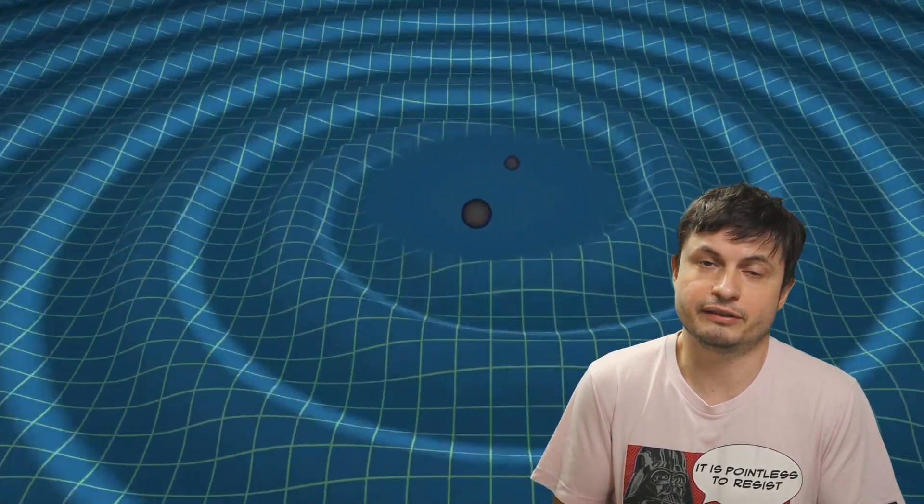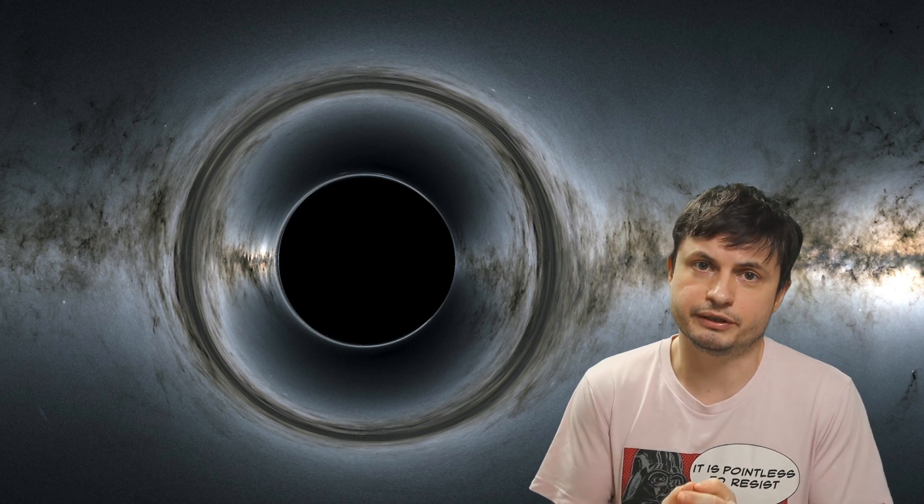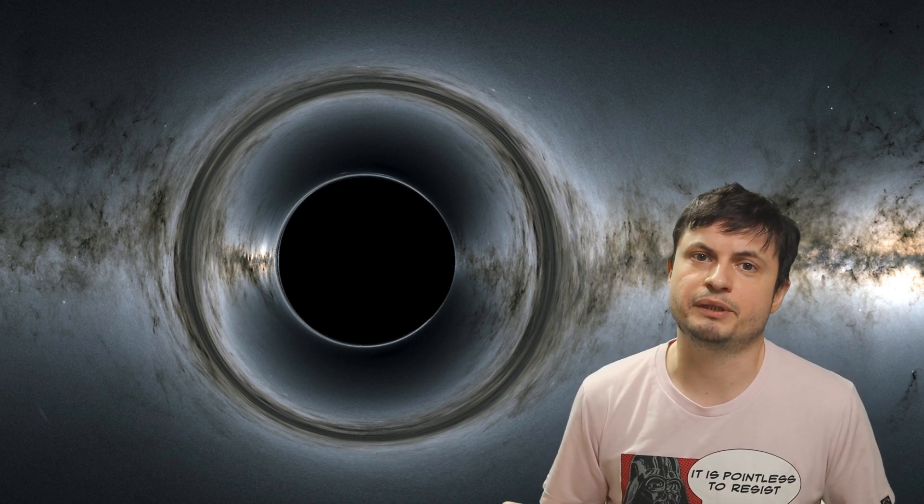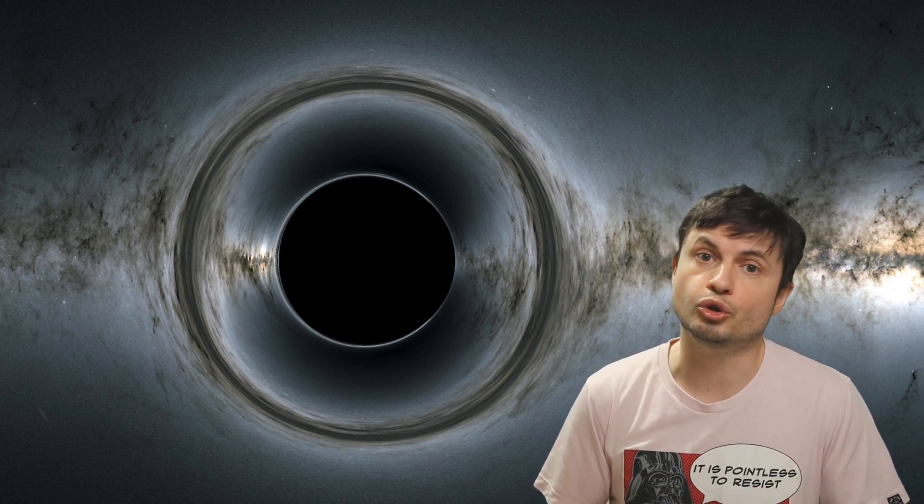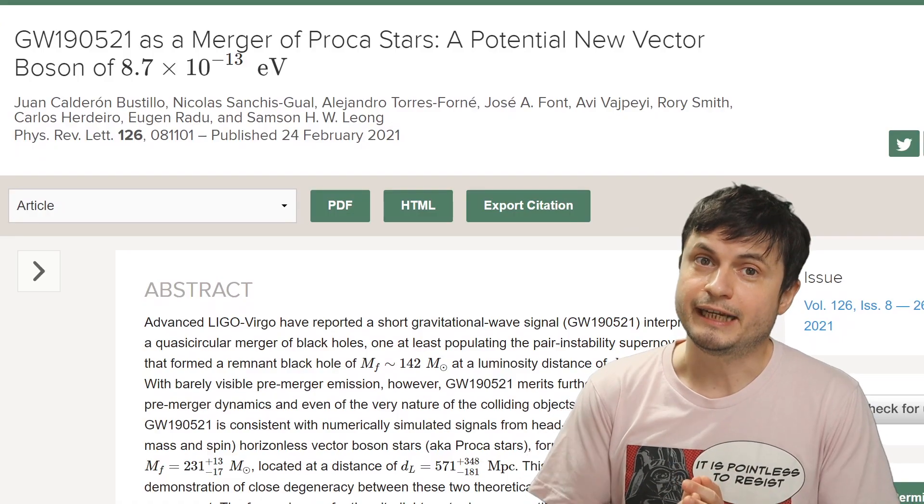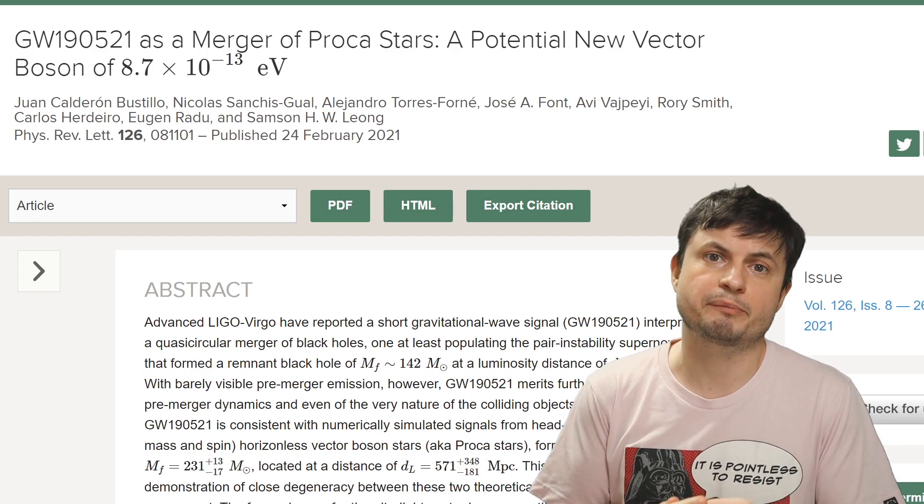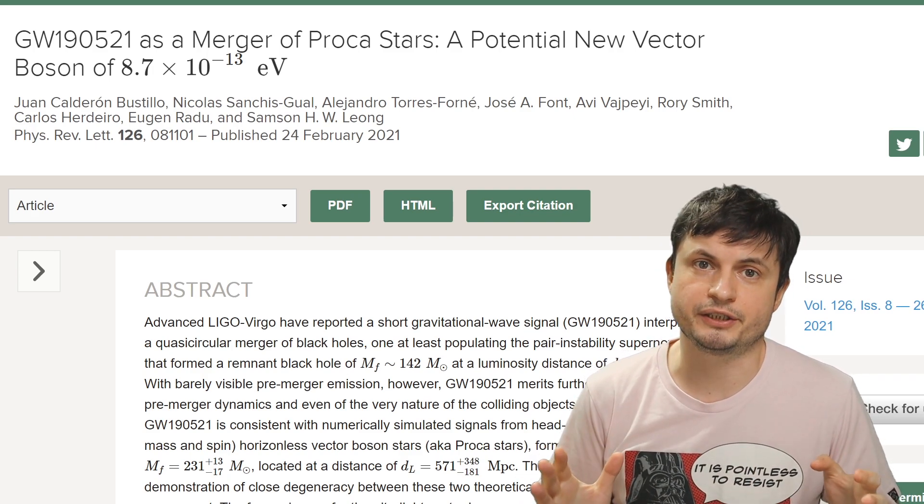Second of all, it explains that dark matter is real and can even create objects similar to black holes, in this case a boson star. And third of all, it once again confirms intermediate black holes exist. So in some sense, this theory or this paper provides a lot of solutions, while at the same time also providing a potential value for the mysterious dark matter particle known as axion.